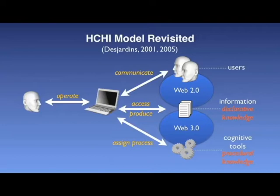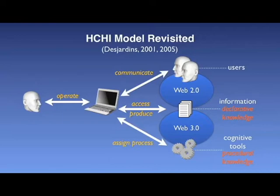Four types of interactions can be identified, allowing issues to be addressed and tools chosen for each. First, user-computer interaction. Second, user-technological object interaction. Third, interacting with others — the user through the technological object to other users. Fourth, interacting with information — the user interacting with the technological object to access declarative knowledge. And finally, using information processing tools — the user interacting with the technological object, using computer programs as cognitive tools to create procedural knowledge.